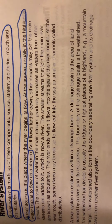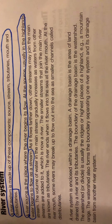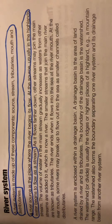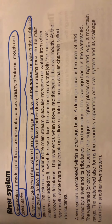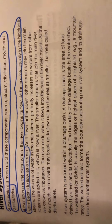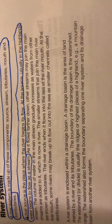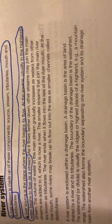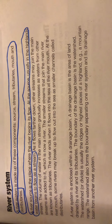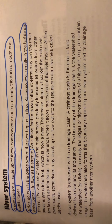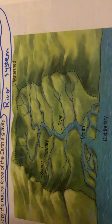A river system is enclosed within the drainage basin. A drainage basin is the area of land drained by the river and its tributaries. The boundary of the drainage basin is the watershed. The watershed or divide is usually the ridges or highest places of the highland, for example, a mountain range. The watershed also forms the boundary separating one river system and its drainage basin from another river system.